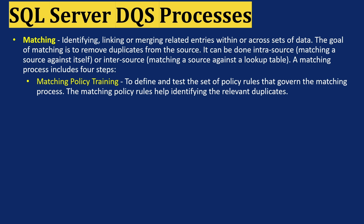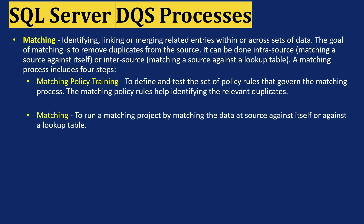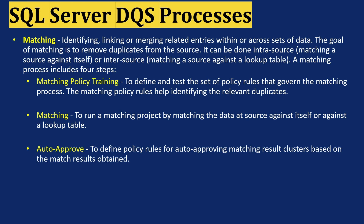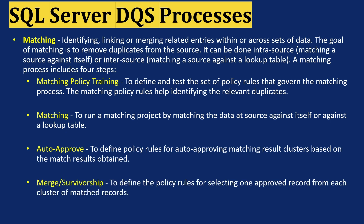The matching process includes four steps. First, matching policy training: to define and test the set of policy rules that govern the matching process, helping identify relevant duplicates. Second, matching: to run a matching project by matching the data at a source against itself or a lookup table. Third, auto-approved: to define policy rules for auto-approving matching result clusters. Fourth, match or survivorship: to define policy rules for selecting one approved record from each cluster of matched records.